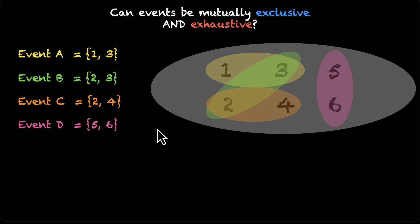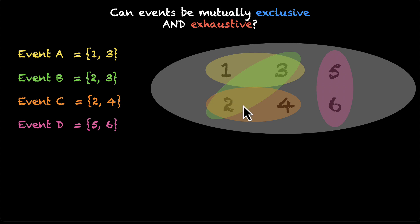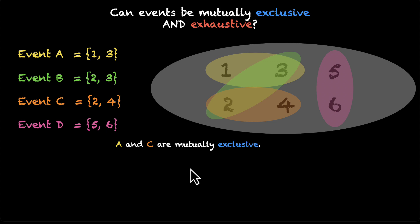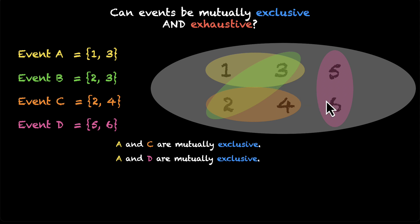Let's take them one by one. Events A and B — yellow and green — they overlap, so they're not mutually exclusive. What about events A and C — yellow and orange? They don't overlap: {1,3} and {2,4}. So A and C are mutually exclusive. What about A and D — yellow and pink? They're also mutually exclusive; there is no overlap.